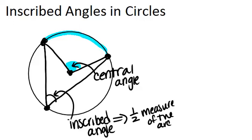So for example, if this arc was 100 degrees, then this angle, the central angle, would also be 100 degrees, but the inscribed angle would be 50 degrees.